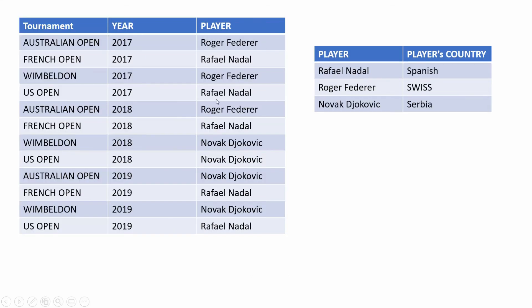The first data set has the same candidate key but now it is not in violation of third normal form. The second data set has player name as the primary key and it also complies with third normal form. So let's do a quick recap: a data set is in third normal form if it is in second normal form and all the non-prime attributes are solely dependent on the candidate key.